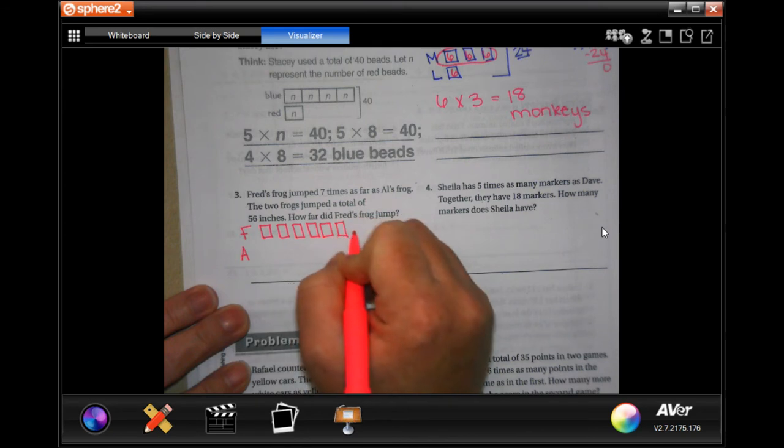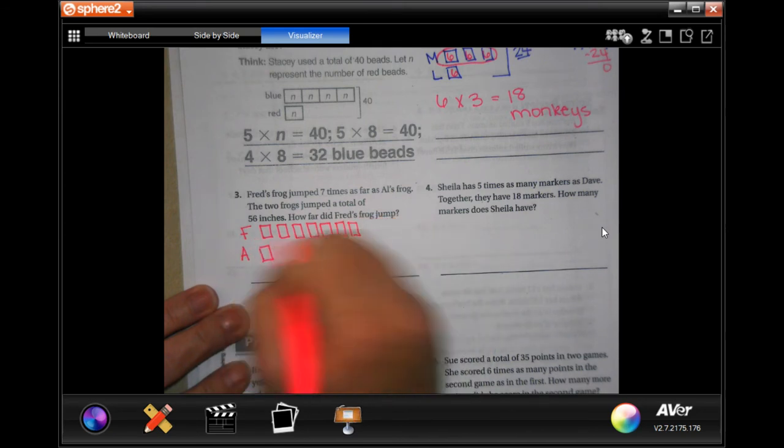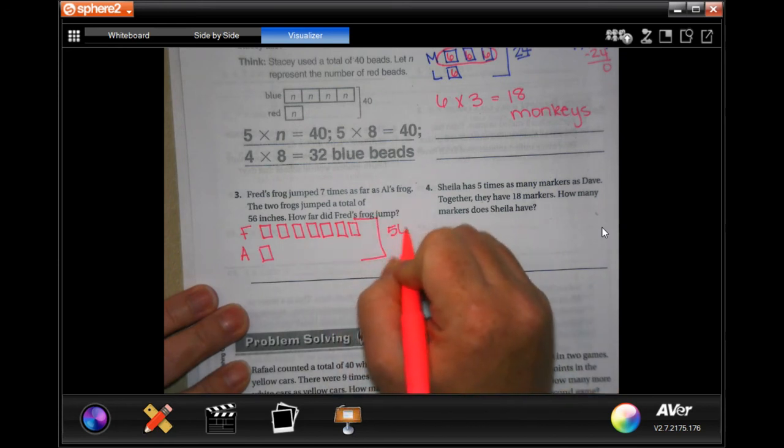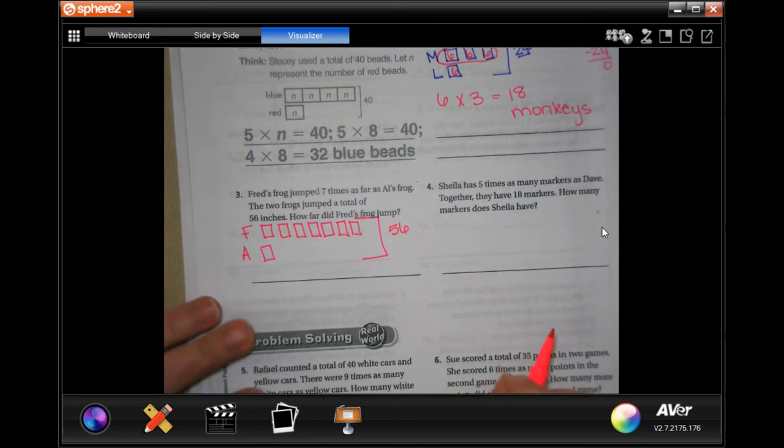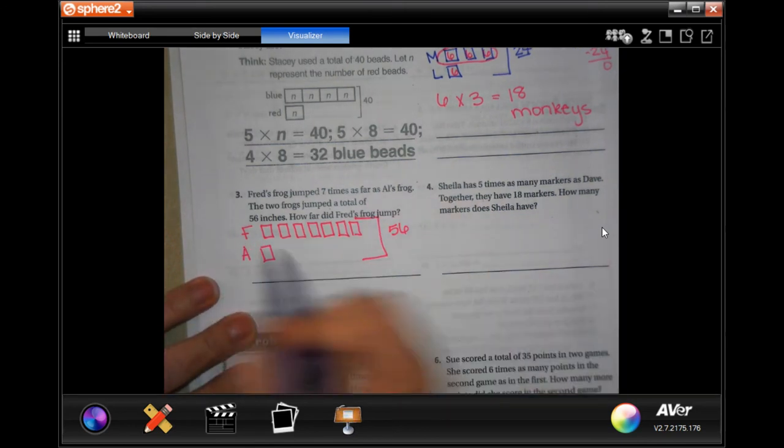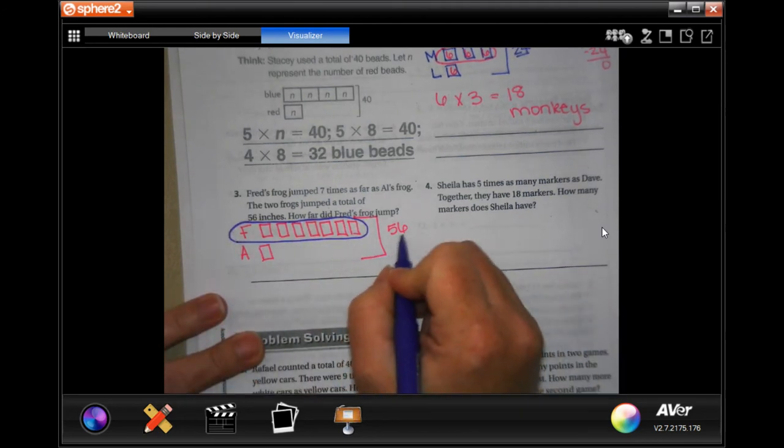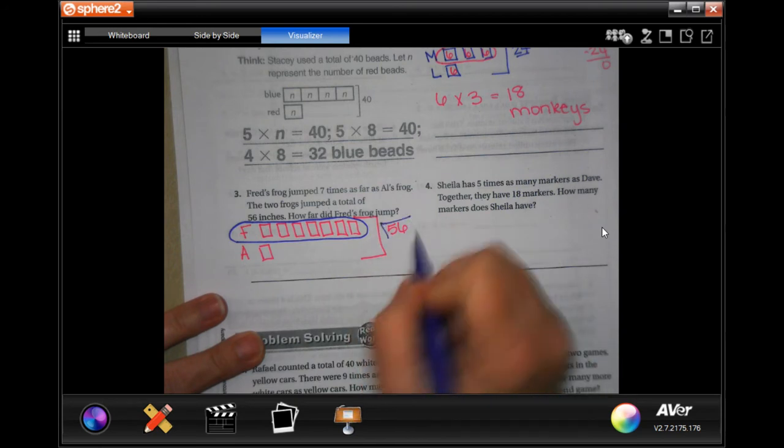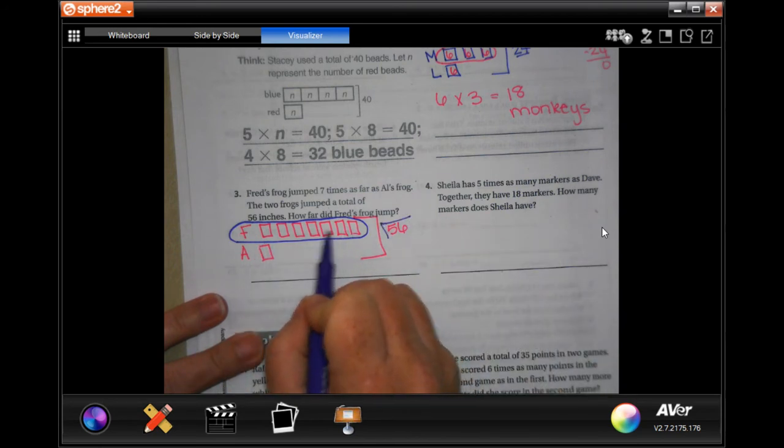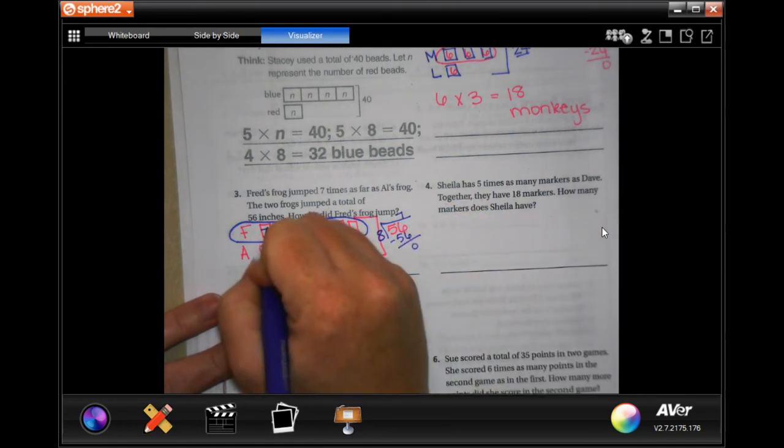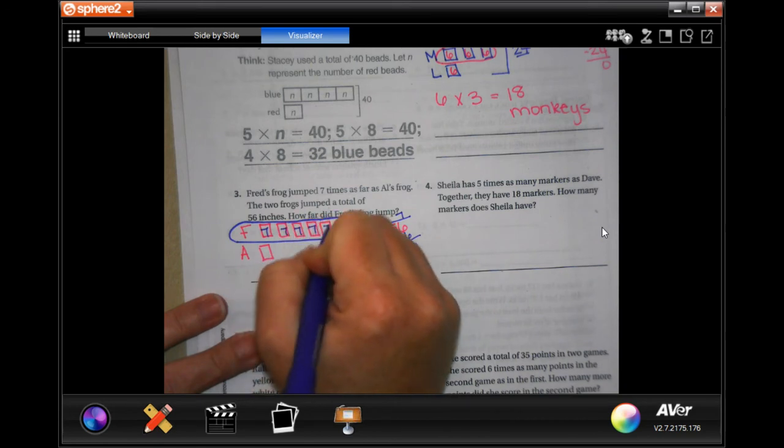Owl's frog is one, Fred's frog is seven. Total there's 56 inches. How far did Fred's frog jump? We want to know this one. I have 56 and I'm going to divide that by the number of boxes: one, two, three, four, five, six, seven, eight. Now I know eight goes into 56 seven times. That is 56.